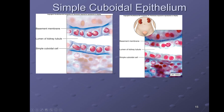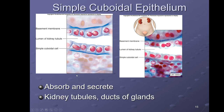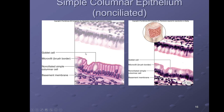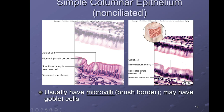Simple cuboidal epithelium — one layer of cube-shaped cells. The number one place we have this is the kidney. This image shows a longitudinal section of a kidney tubule, so you're seeing the tube twice because it was cut longitudinally. Simple cuboidal has one layer of cube-shaped cells, and if you saw a cross-section of this it would look a little different.